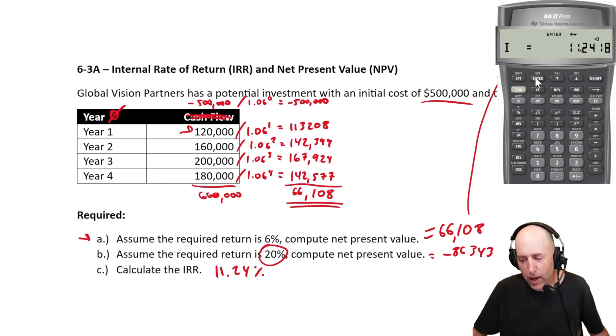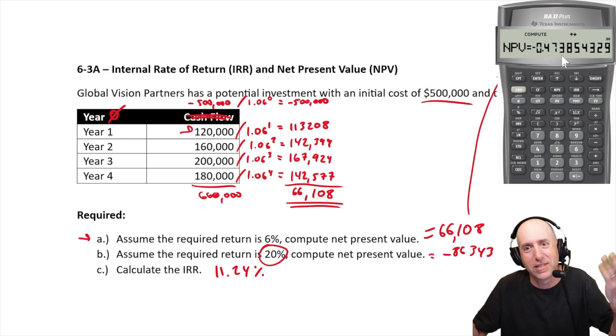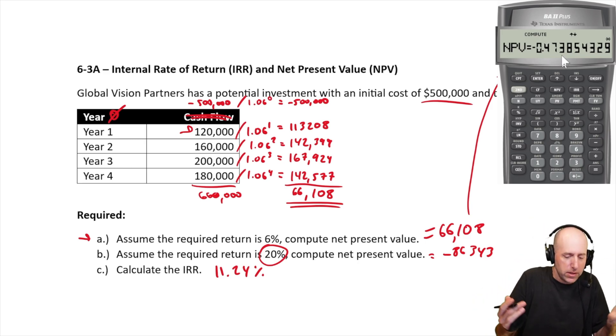and now I compute the NPV. I hit the down arrow, and NPV is negative 86, but I hit compute. NPV should be very close to zero. If I didn't round it all, it would be zero. Let's see what NPV is with that slightly rounded answer. You can see it's 0.4 cents, 47 cents. It's zero, essentially.